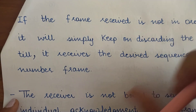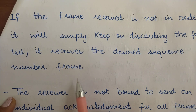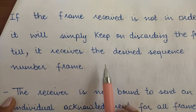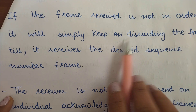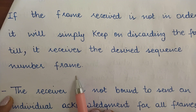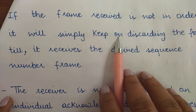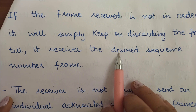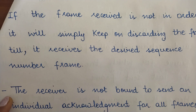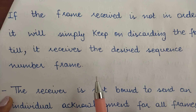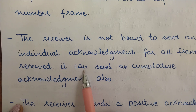If the frame received is not in order — that is, out of order — the receiver will simply keep discarding frames until it receives the desired sequence number frame. The receiver will accept only the frame it was expecting. For example, if the receiver has just received frame with sequence number 1, it expects frame with sequence number 2 next. If it instead receives sequence number 3, it discards it and keeps waiting for sequence number 2.